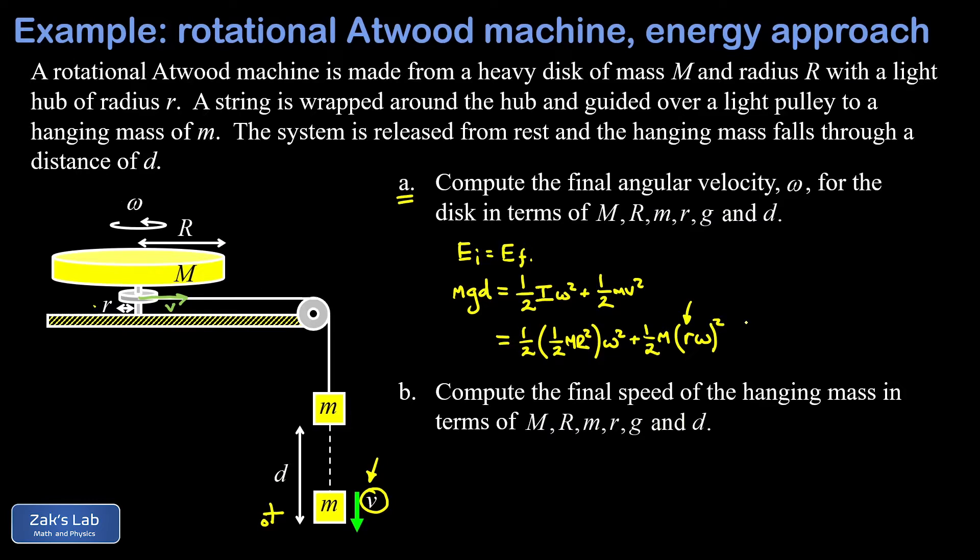Now we've got both of our kinetic energy terms in terms of omega, so we'll clean things up a little as we get ready to solve for omega. The first thing I'm going to do is multiply both sides by four, so I end up with four mgd on the left.